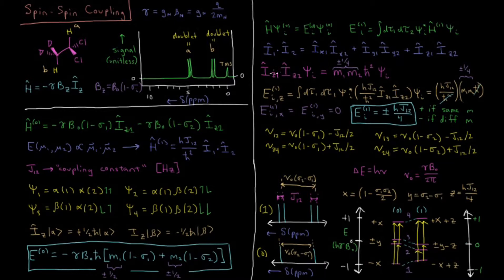Now if we start with z, if we act iz1, z2 on a given wave function psi i, what you'll get for your eigenvalue is m1, m2, h bar squared times psi i. Because our iz1 will act on alpha 1 or beta 1, and that'll give us plus or minus 1 half for m1 times h bar alpha or h bar beta.